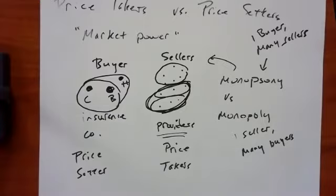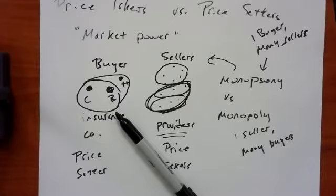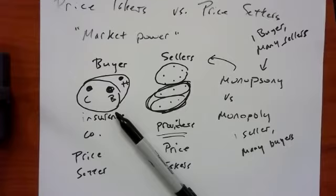If you are the only buyer in town and everybody's trying to sell to you — say there's one big insurance company like UNH in your town and they have one insurance plan, and you're a provider — you don't have much ability to negotiate. If there are ten family practice physicians in town and one insurance plan, that insurance plan can muscle you quite a bit. They'll say we're going to pay $75 per visit, and if you say no, we'll go to one of the other nine providers.